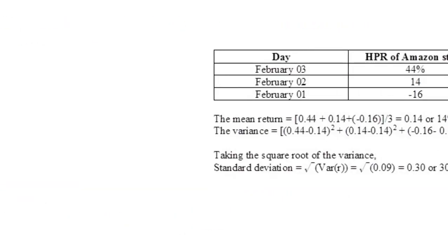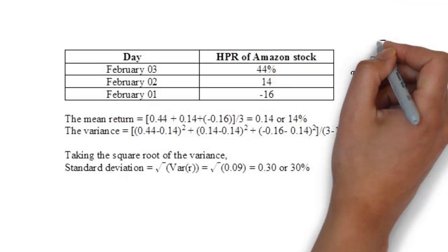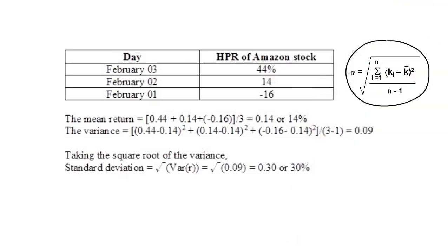Suppose that you don't know the probability information, but you have the historical returns of a stock as in the following table. Now, if you are to calculate the expected return or mean and standard deviation as you did in the previous question, you are going to use the simple statistical formula for both mean and standard deviation.